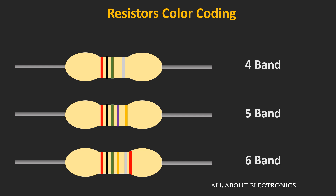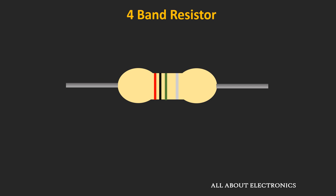The commercially available resistors can have either 4, 5, or 6 bands. And depending upon the number of color bands, these resistors are known as either 4-band, 5-band, or 6-band resistors.